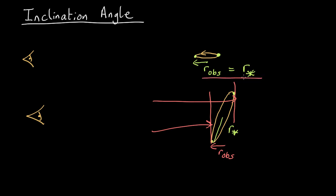So R observed equals R star if the orbit is edge-on, but in general, they are not going to be equal to each other. So how are we going to compare them? Well, we can look at this with a bit of trigonometry.